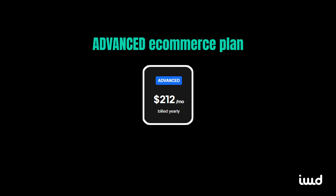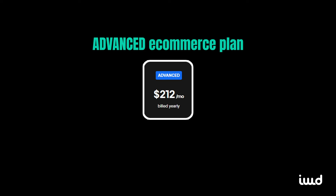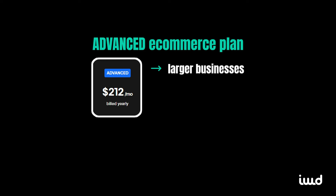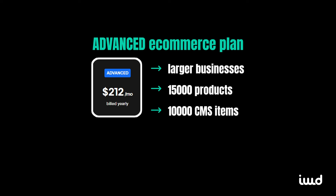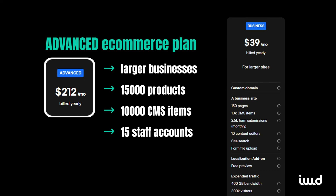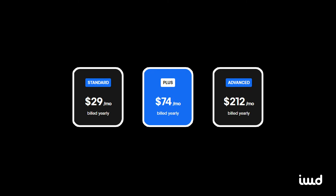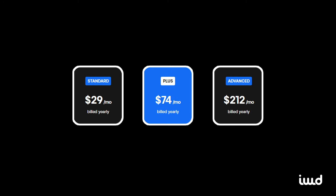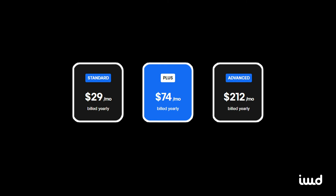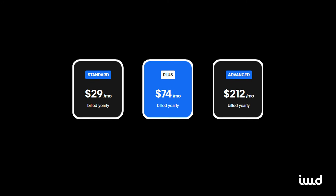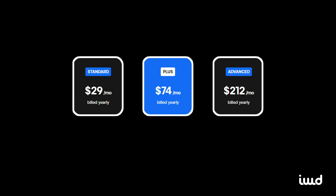Lastly, the Advanced plan, at $212 per month when billed yearly, is made to propel online businesses to new heights. You'll get storage for 15,000 products, 10,000 CMS items, along with 15 staff accounts, and you'll have access to the business plan features with a 0% transaction fee. Each plan offers distinct benefits suited to different stages and scales of e-commerce operations, making sure there's a Webflow plan for everyone.